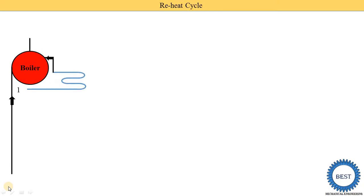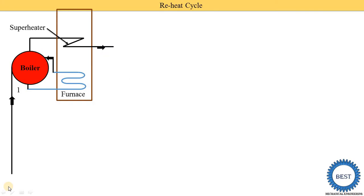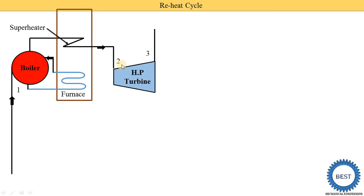The first component is the boiler. In the boiler, the water is converted into steam. Then the steam is passed through the superheater. Then steam is supplied for the expansion process in the turbine — that is called the high pressure turbine. In a reheat cycle, two turbines are provided, or three or four turbines, depending on the requirement. In the high pressure turbine, the isentropic expansion of steam is carried out — this is called process two to three.